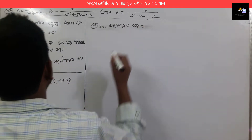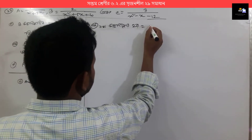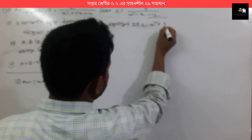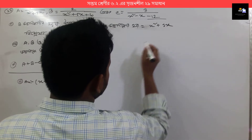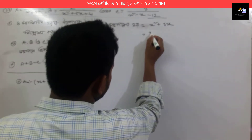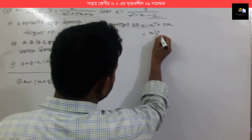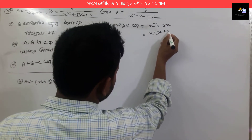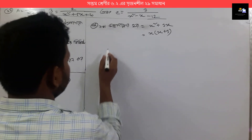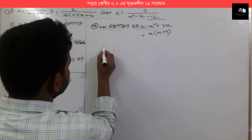We have x squared plus 3x. To factor x squared plus 3x, take x common to get x(x plus 3).